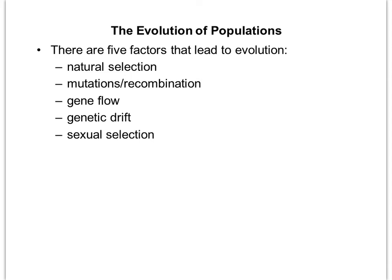These are the five factors that lead to evolution. Generally when we think about evolution, we think about Darwin's theory of evolution by means of natural selection. Natural selection takes a long time — thousands and millions of years — but these other four things listed below it can happen much more quickly and will often happen in populations. This is how populations can evolve.